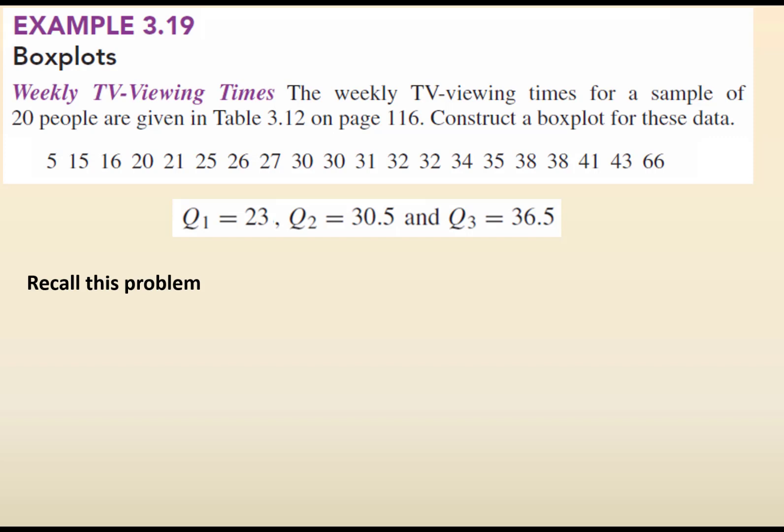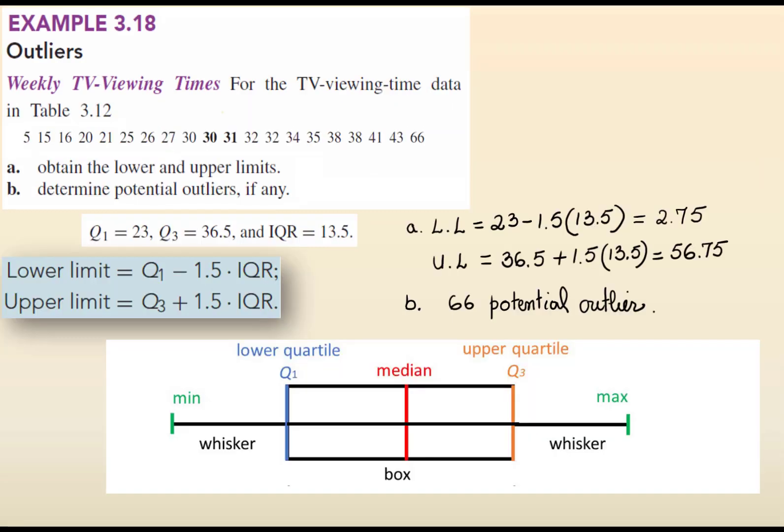We have to go back to this problem again and finish it. Let's see what we have. We have the lower and upper limit. We have the outlier, which is 66.